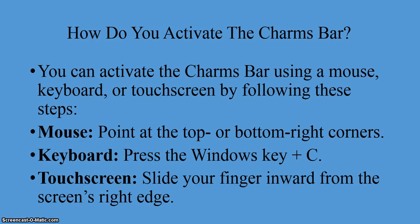Now how do you activate the charms bar? There are three different methods: by using your mouse, your keyboard, or by touching the screen if you have a touch screen on your PC. With your mouse, point your cursor to either the far top-right or bottom-right corners. With your keyboard, press the Windows key plus the letter C. With a touch screen, slide your finger inward from the screen's right edge.